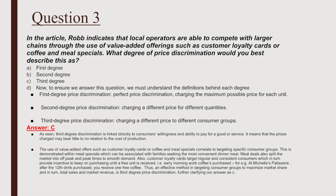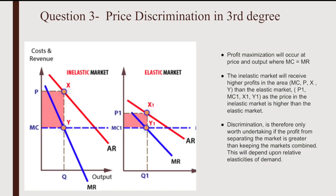To further elaborate, we must look at elasticity of demand. When price discrimination is used, profit maximization occurs at the price and output where MC equals MR. The inelastic market will receive higher profits than the elastic market, as the price in the inelastic market is higher. Price discrimination is therefore only worth undertaking if the profit from separating the markets is greater than keeping them combined, and this will depend on the relative elasticities of demand.